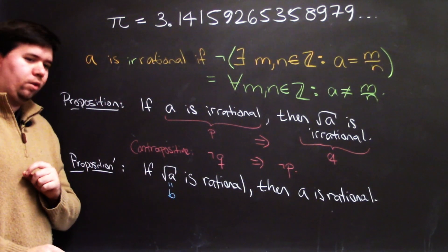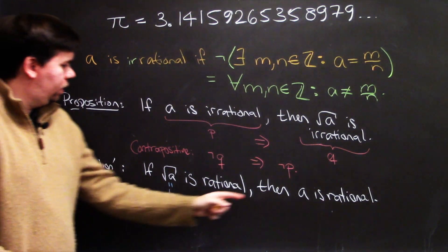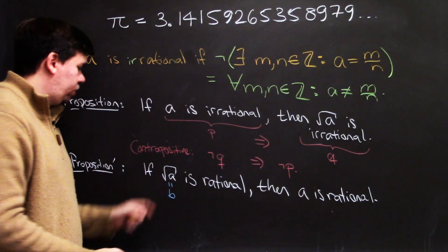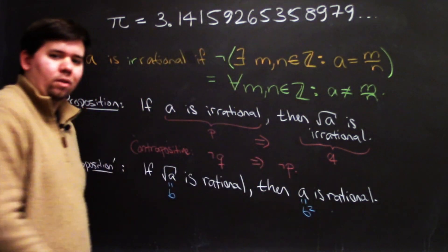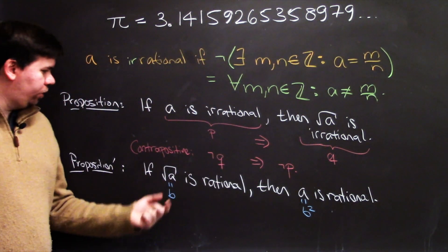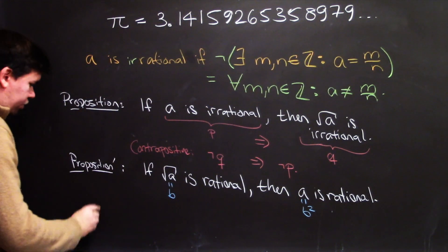So I'm just going to say, if b is rational, then, well what would a be? If b is the square root of a, then we have b squared is rational. So make a small change there, and let's try and prove this now. So here's our proof.